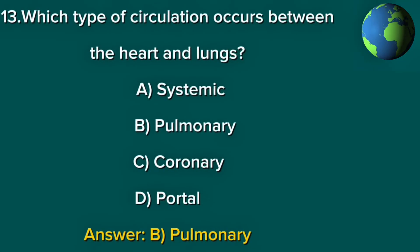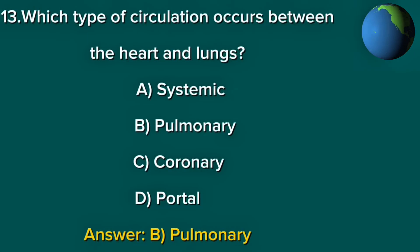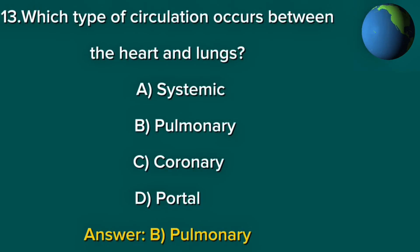Question 13. Which type of circulation occurs between the heart and lungs? A. Systemic. B. Pulmonary. C. Coronary. D. Portal. Answer: B. Pulmonary.